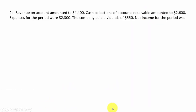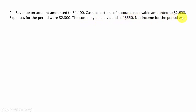Question two: revenue on account amounted to $4,400. Cash collections on accounts receivable amounted to $2,600. Expenses for the period were $2,300. The company paid dividends of $5,500. Net income for the period was what? They want to know what was net income.